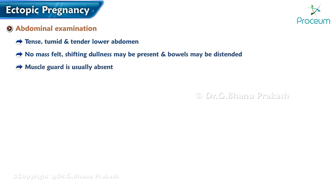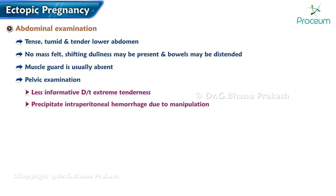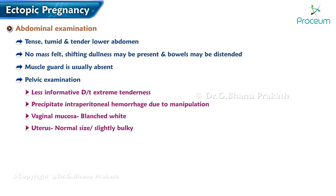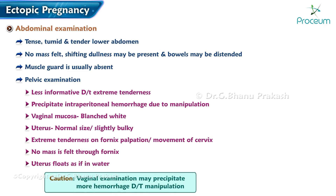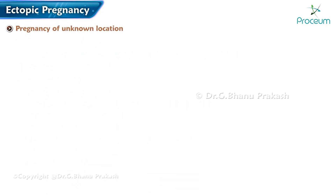Muscle guarding is usually absent. Pelvic examination is less informative due to extreme tenderness and may precipitate more intraperitoneal hemorrhage. Findings include: vaginal mucosa appearing blanched white, uterus normal in size or slightly bulky, extreme tenderness on fornical palpation or on movement of the cervix, no mass usually felt through the fornix, and the uterus floats as if in water.